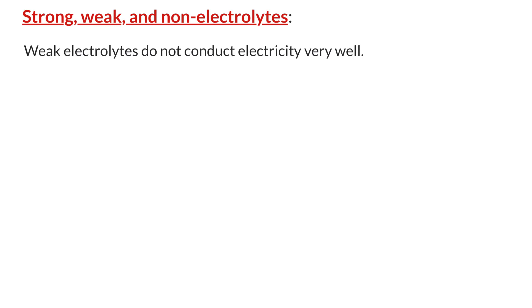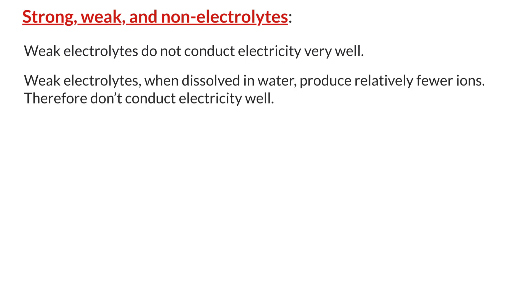Weak electrolytes do not conduct electricity very well. Weak electrolytes, when dissolved in water, produce relatively fewer ions. Therefore, they don't conduct electricity well. Examples of weak electrolytes are less-soluble ionic compounds such as silver chloride as we discussed earlier. Some other examples include weak acids and weak bases.